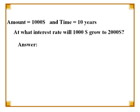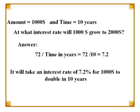This works the other way around as well. Suppose you have $1,000 and you want to calculate the interest rate you will need to double the amount in 10 years. Here, we divide the number 72 by the number of years to get the interest rate. 72 divided by 10 gives us 7.2, which is the interest rate required to double your money in 10 years.